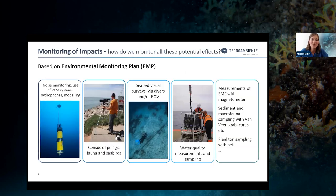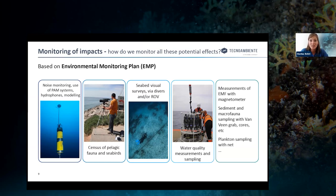Other monitoring techniques include census of biological fauna and seabirds — for example using binoculars from land or on board, aerial surveys, and GPS tagging of birds. It's also very important to have a Marine Mammal Observer on board. Benthic visual surveys can be done by divers or ROV depending on water depth, location, and safety considerations. We also conduct water quality measurements using a rosette system made of several Niskin bottles to collect water at different predefined depths. There are many other techniques and methods, all tailor-made to the environmental variable of interest.